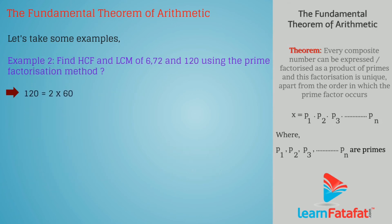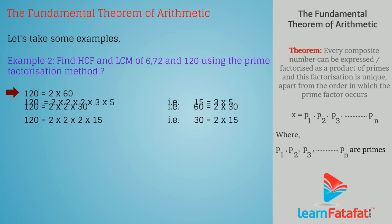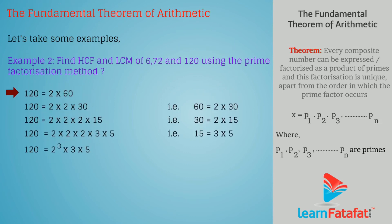Now, 120 can be factorized as 2 into 60. Then, by simplifying 60, we get factors of 120 as 2 cubed into 3 into 5.